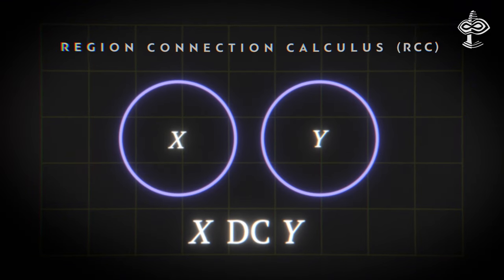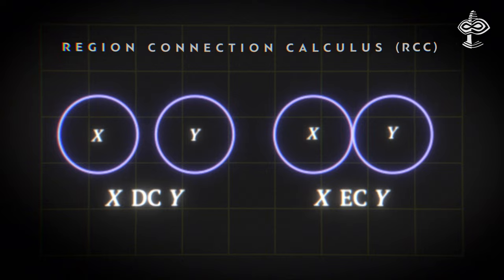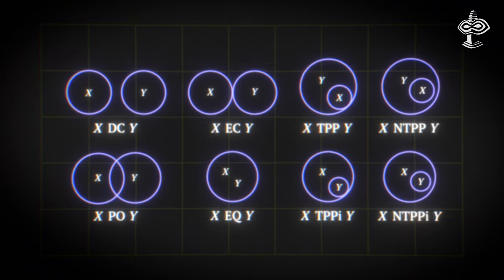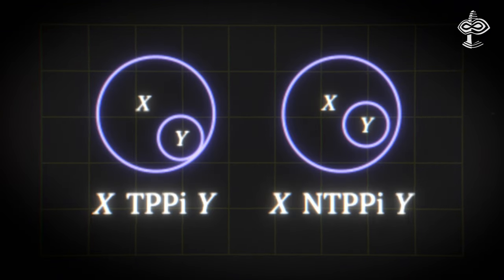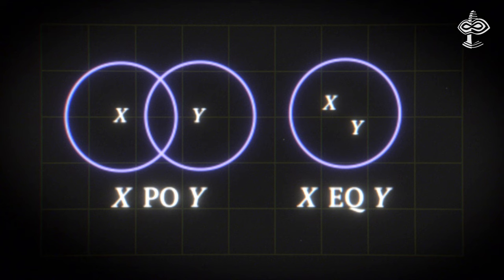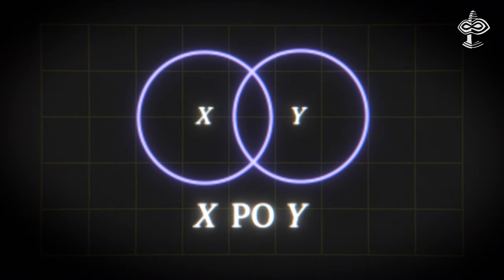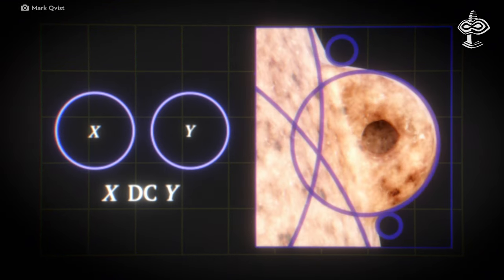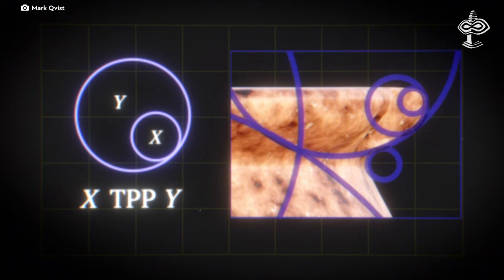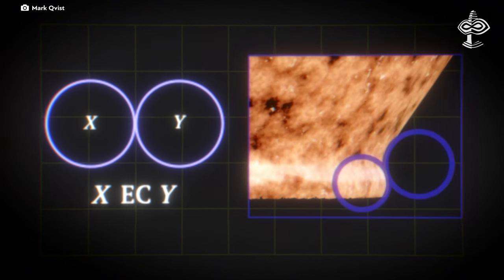Cantor sets have helped lay the foundations for tools like region connection calculus, a method in computer science that explains relations among holes, parts, parts of parts, and the boundaries between parts. This is vital in solving computational problems, running simulations, and designing models.